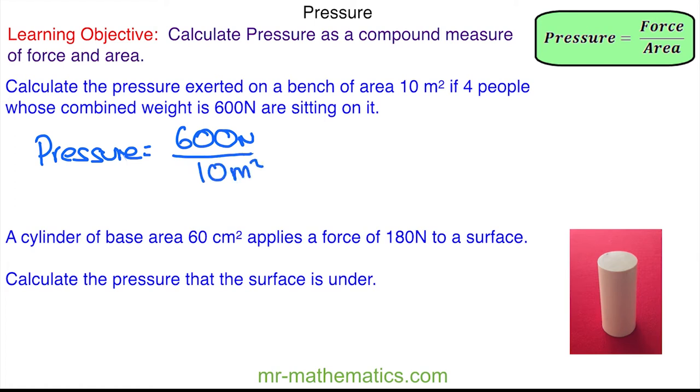So we divide the 600 by the 10 and this gives us 60, and then we divide the newtons by the meters squared, and this gives us our unit for pressure which is newtons per meters squared.